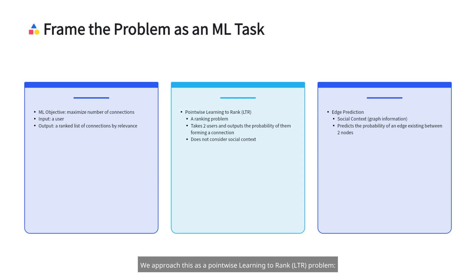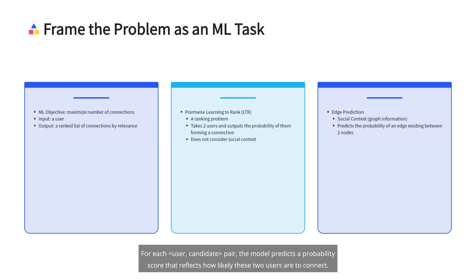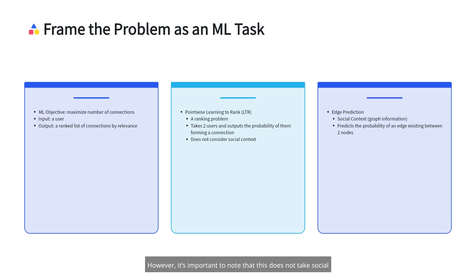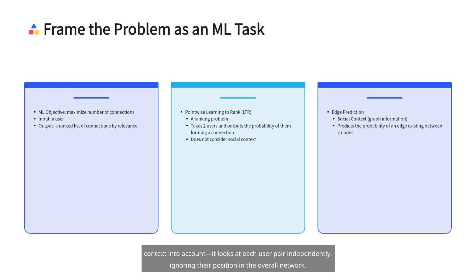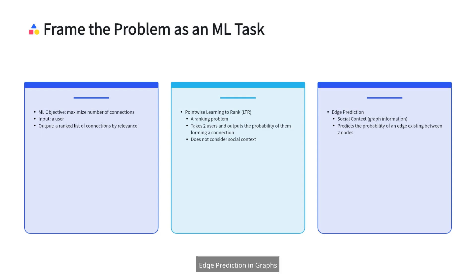We approach this as a point-wise learning-to-rank (LTR) problem. For each user-candidate pair, the model predicts a probability score reflecting how likely these two users are to connect. This becomes a ranking problem — we rank all candidates by their predicted connection likelihood. However, it's important to note that this does not take social context into account; it looks at each user-pair independently, ignoring their position in the overall network.